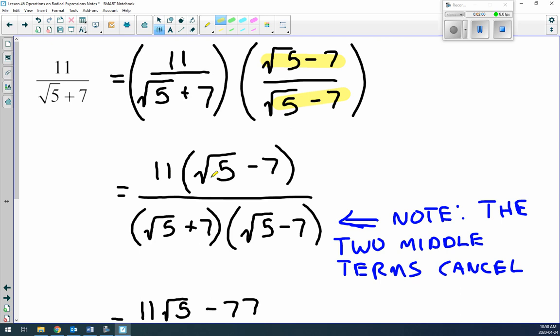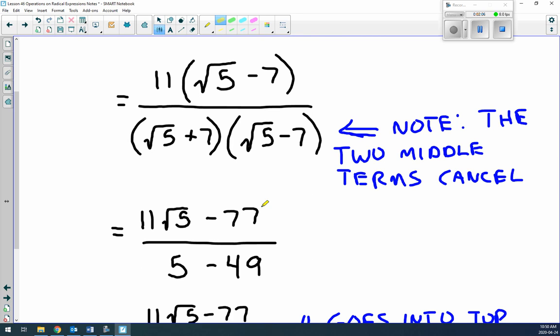11 times root of 5 minus 7. The bottom, two binomials multiply together. Now, if you look at this, it's interesting. Root of 5 plus 7 and root of 5 minus 7. What's going to happen to the two middle terms? They are going to cancel.